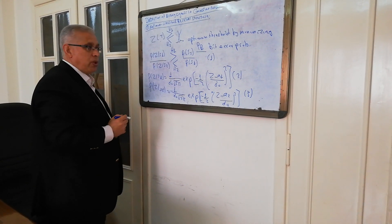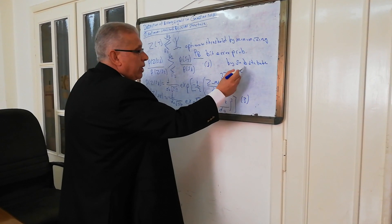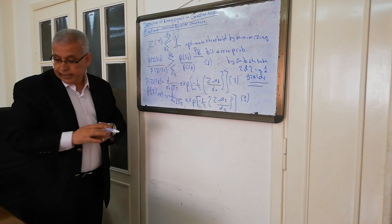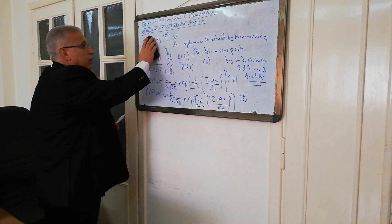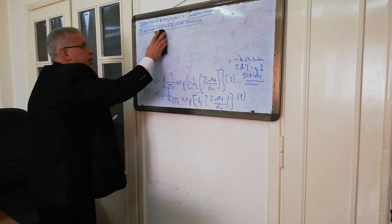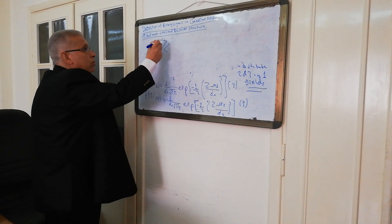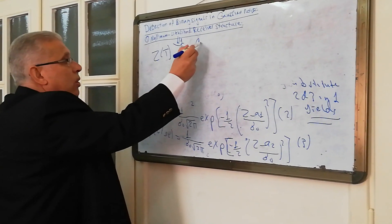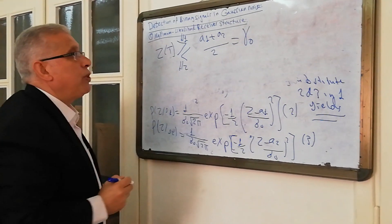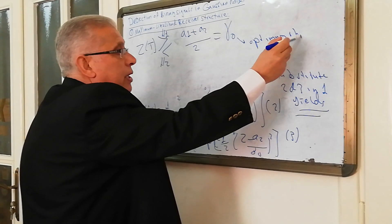By substituting equations 2 and 3 into equation 1, we need to clean the board because of the small board. We will obtain the optimum threshold: the output Z(T), the static output, greater than or equal to H1 / H2, equals (A1 + A2) / 2, which is called the optimum threshold level.